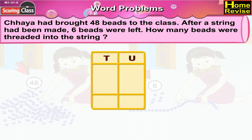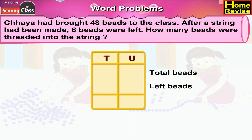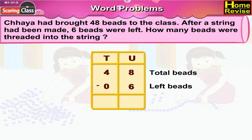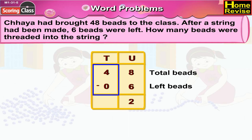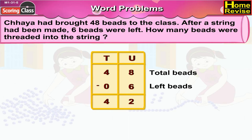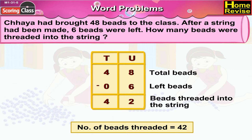The number of beads threaded would be total number of beads minus the number of beads left. That would be 48 minus 6. In the units column, 8 minus 6 is 2. Under the tens column, we have 4 minus 0, that is 4. So, the number of beads threaded into the string are 42.